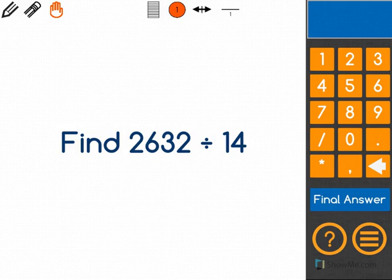This question asks us to find 2,632 divided by 14. When I write that out, it looks like this.